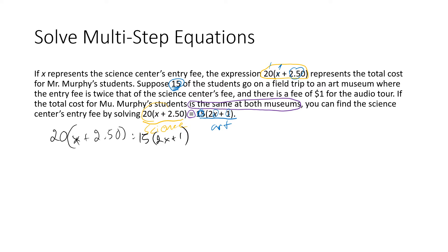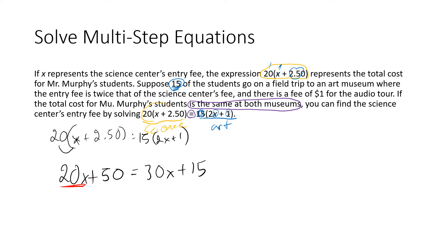Let's start by using the distributive property to get rid of our parentheses. 20 times X is 20X, and 20 times 2.5 is 50. On the other side, 15 times 2X gives us 30X, plus 15 times 1 is 15. Now we're going to move our smaller variable term — 20X — subtracting 20X on both sides. That cancels out, leaving us with 10X + 15 = 50.